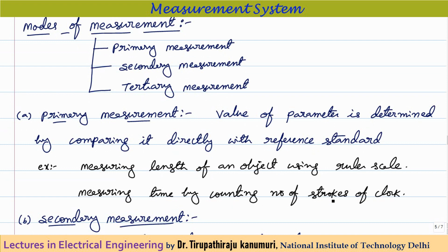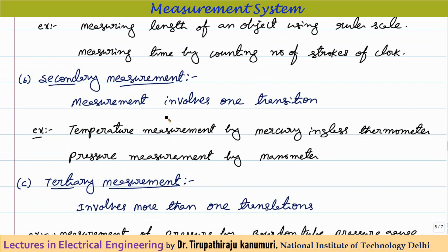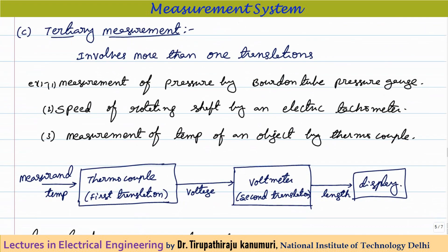Secondary measurement involves one intermediate transition. For example, in a mercury-in-glass thermometer, temperature is converted into the expansion (displacement) of mercury, and you read that displacement. One intermediate step is involved: temperature → mercury expansion. Similarly, pressure measurement using a manometer also involves one intermediate step, making it a secondary measurement.